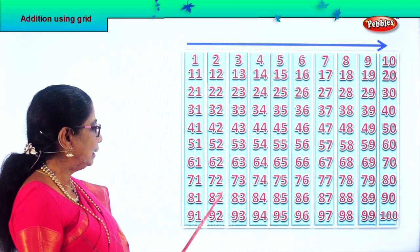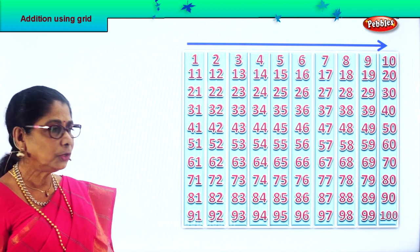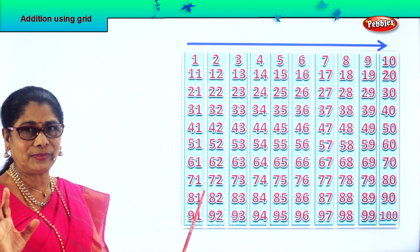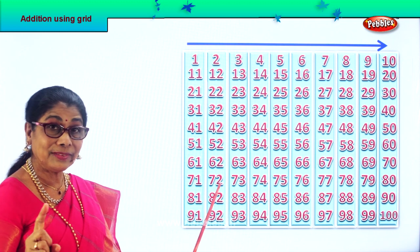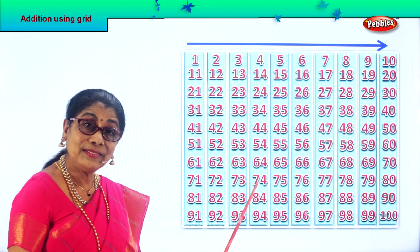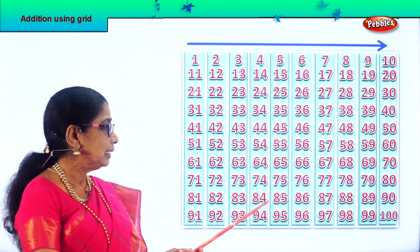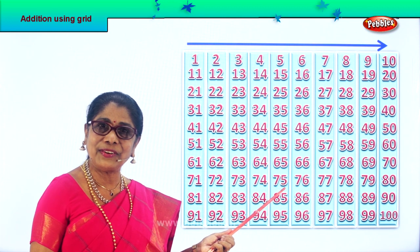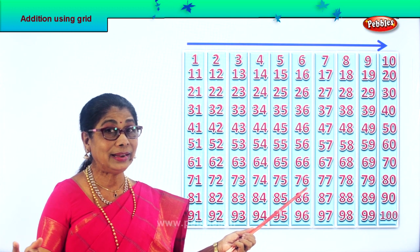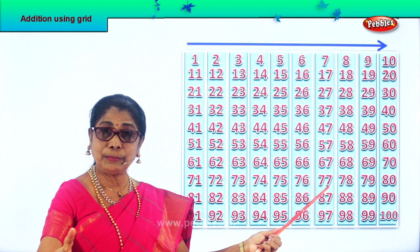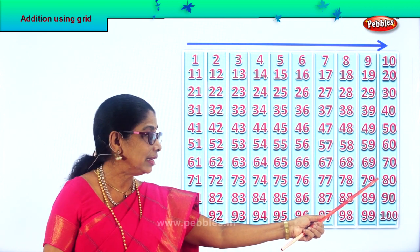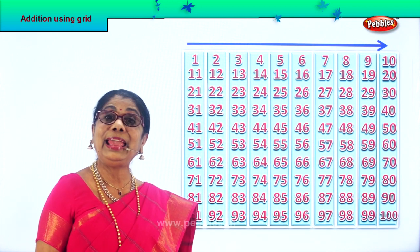Now look at this — let's take 71. To 71 you add 1. 71 plus 1 is 72. 72 plus 1 is 73. 73 plus 1 is 74. 74 plus 1 is 75. 75 plus 1 is 76. 76 plus 1 is 77. 77 plus 1 is 78. 78 plus 1 is 79. 79 plus 1 is 80. Good.